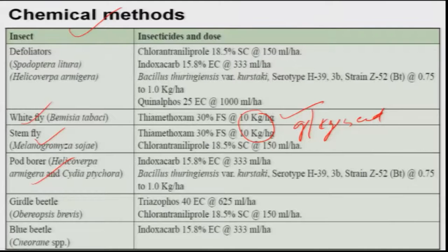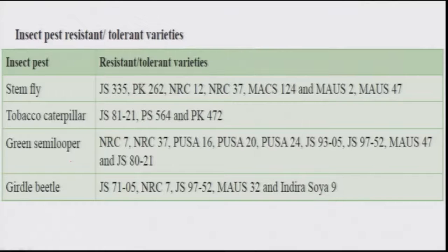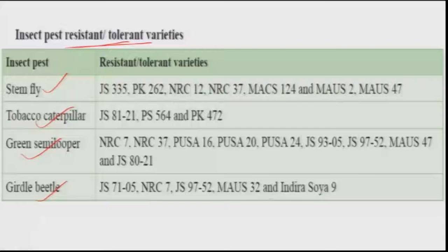For pod borer, insecticide applications are recommended. For girdle beetle, triazophos is one of the most effective chemicals. All these components need to be integrated effectively. Resistant or tolerant genotypes are also available — varieties from Madhya Pradesh are recommended against stem fly, some resistant genotypes against tobacco caterpillar, varieties for semilooper, and a series of resistant varieties for girdle beetle — all can be incorporated into effective IPM for soybean.